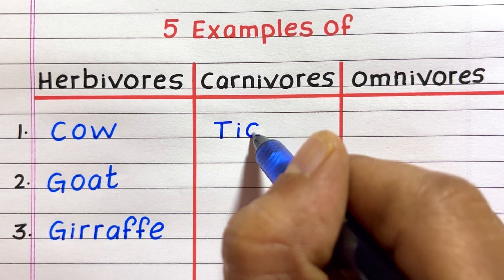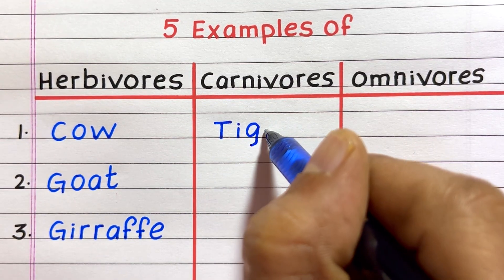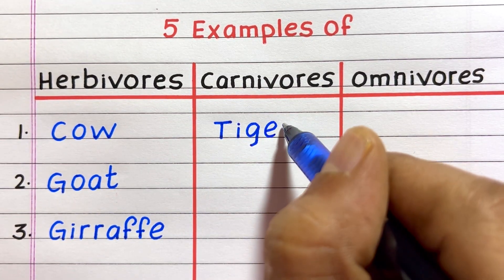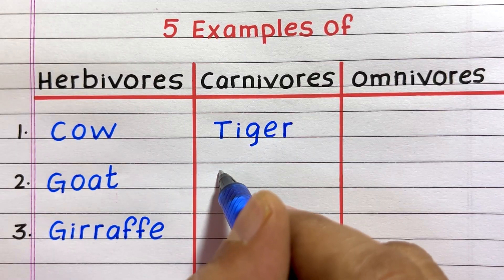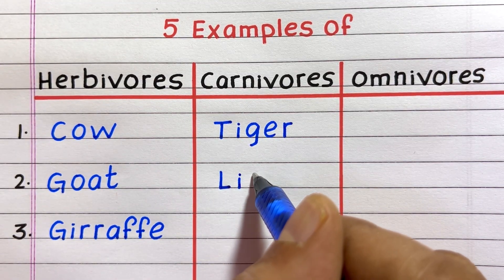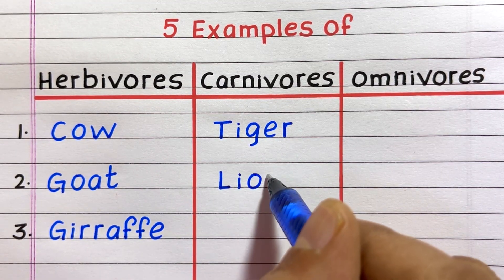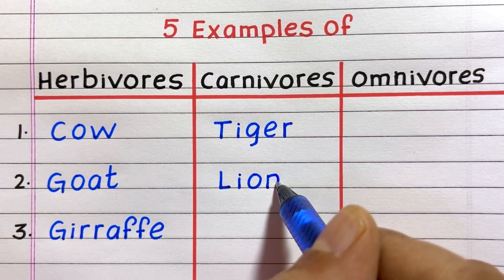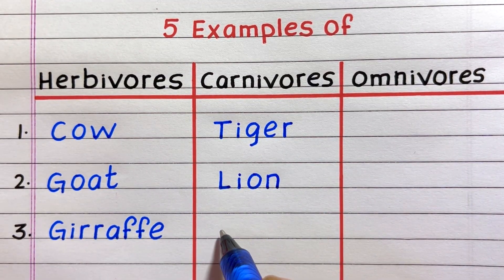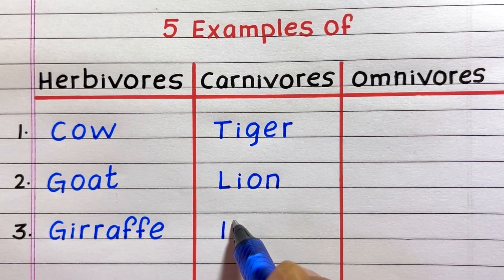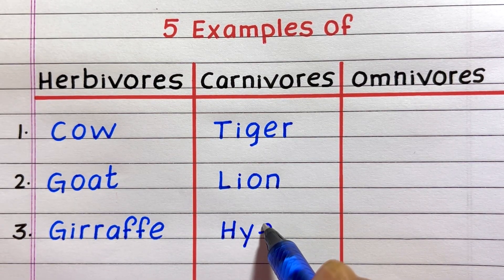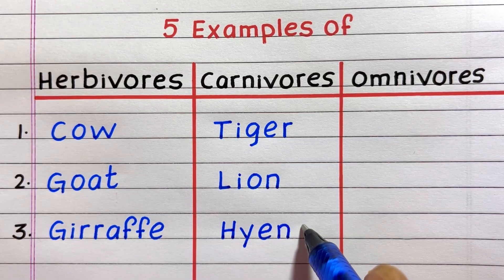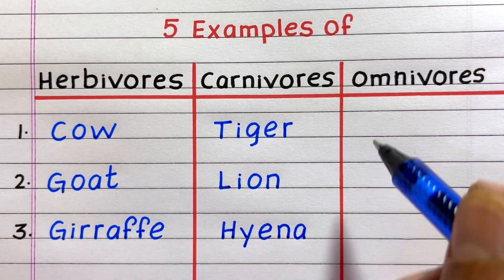The first example of a carnivore is tiger, second lion, third hyena.